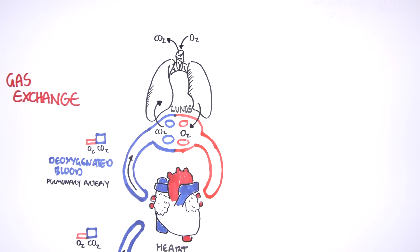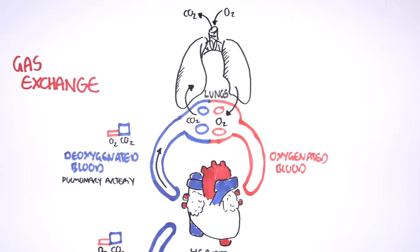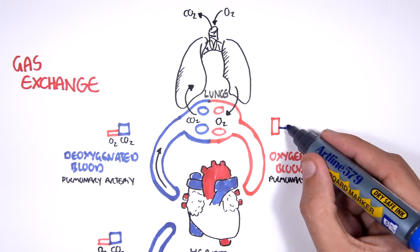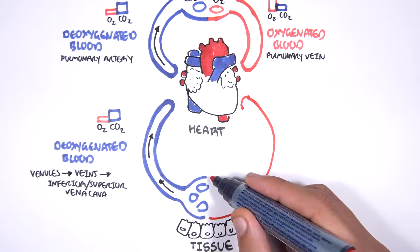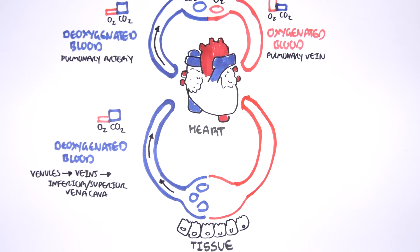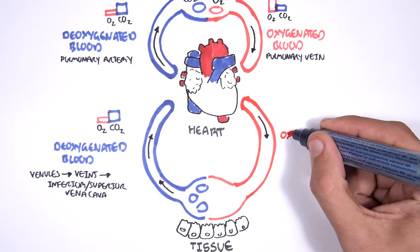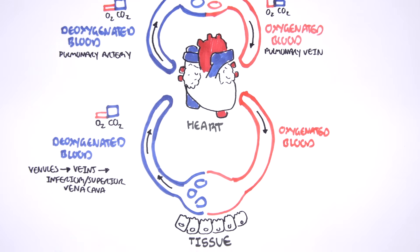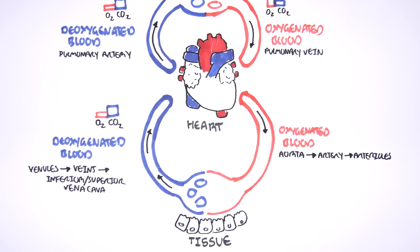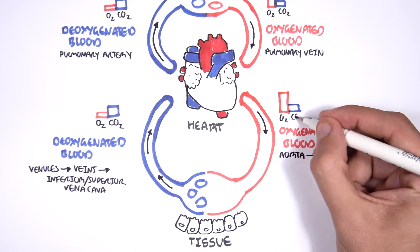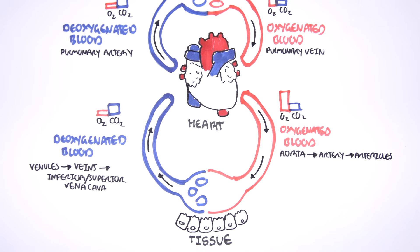This oxygenated blood supply will then go back to the heart through the pulmonary vein. If we look at the partial pressure of oxygen and carbon dioxide, we can see that we have higher amounts of oxygen compared to carbon dioxide. As the pulmonary vein brings this oxygenated blood back to the heart, the heart pumps it to tissues — first through the aorta, then arteries, then arterioles, which form capillaries, and then into tissues.